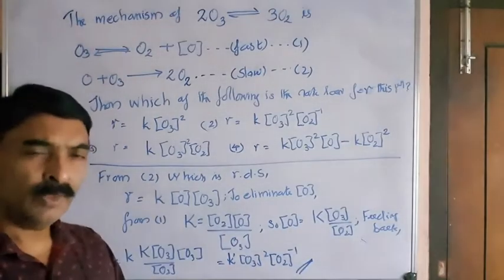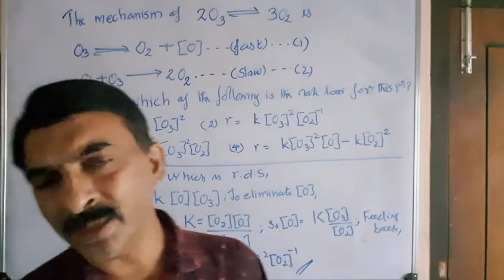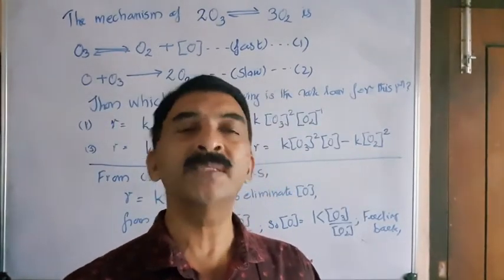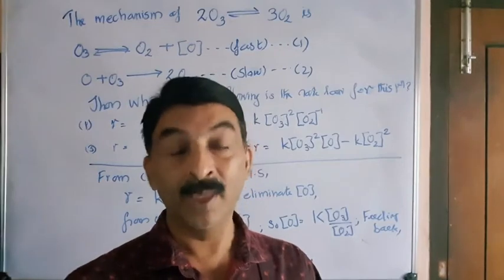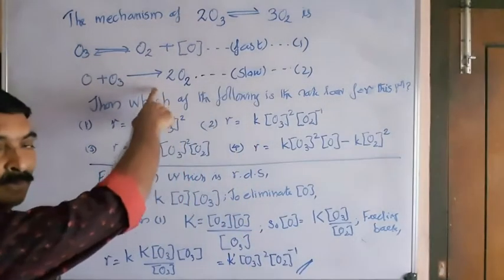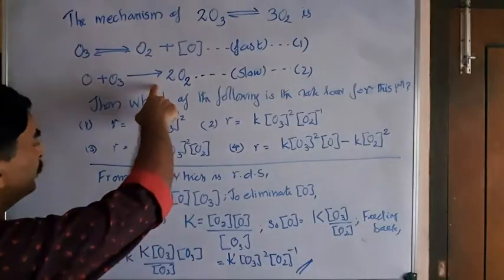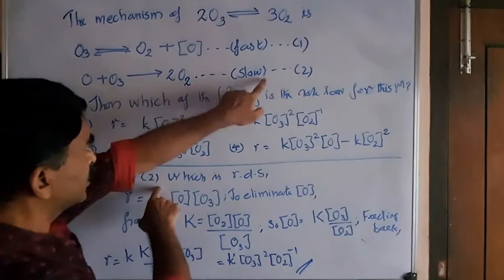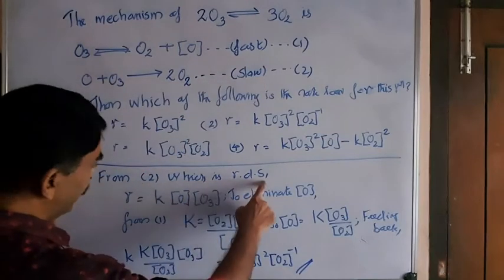See, we always have to write the rate law by looking at the slowest step, which is the rate determining step. Here, this step is the rate determining step. So by looking at this, we start writing from equation 2, slow step, which is the rate determining step.